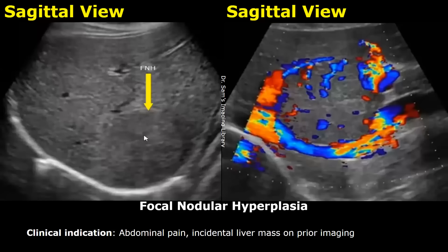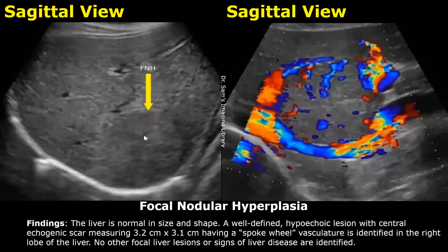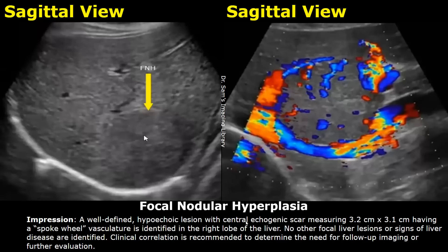The clinical indication for focal nodular hyperplasia can be abdominal pain and incidental liver mass on prior imaging. It has variable appearances; usually a well-defined hypoechoic lesion with a central echogenic scar is seen, and it has a spoke-wheel vasculature on color Doppler. Write these features in the findings as well as the size and location of the mass. In the impression, write a well-defined hypoechoic lesion with central echogenic scar, its size, the spoke-wheel vasculature, and the location in the liver.